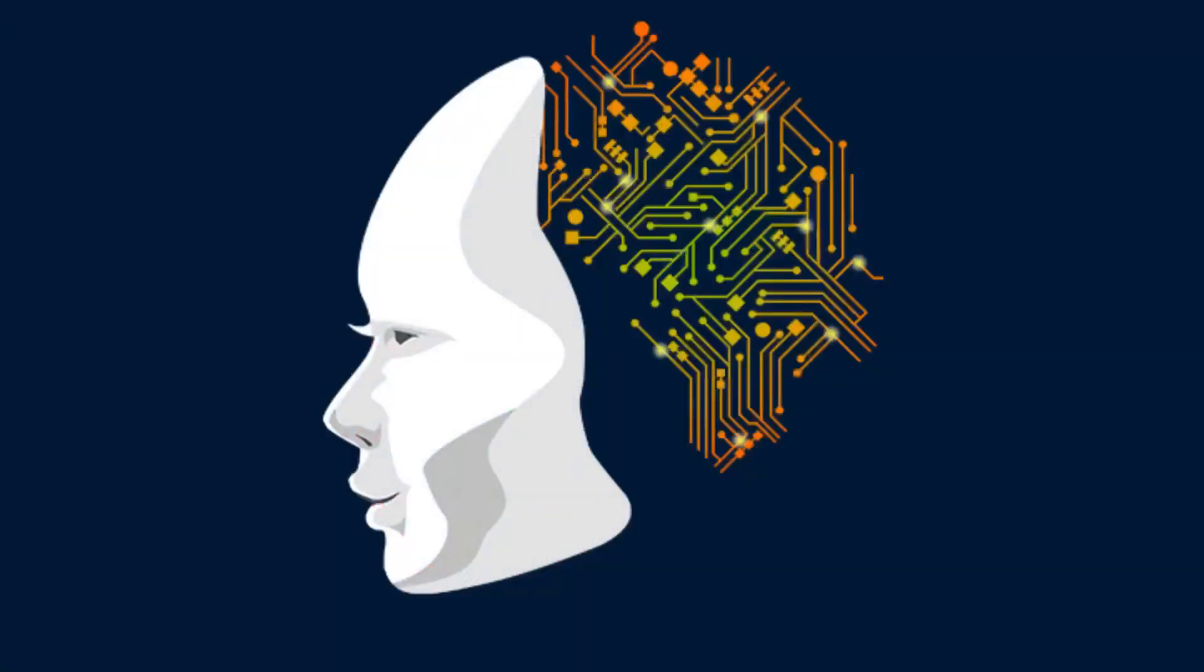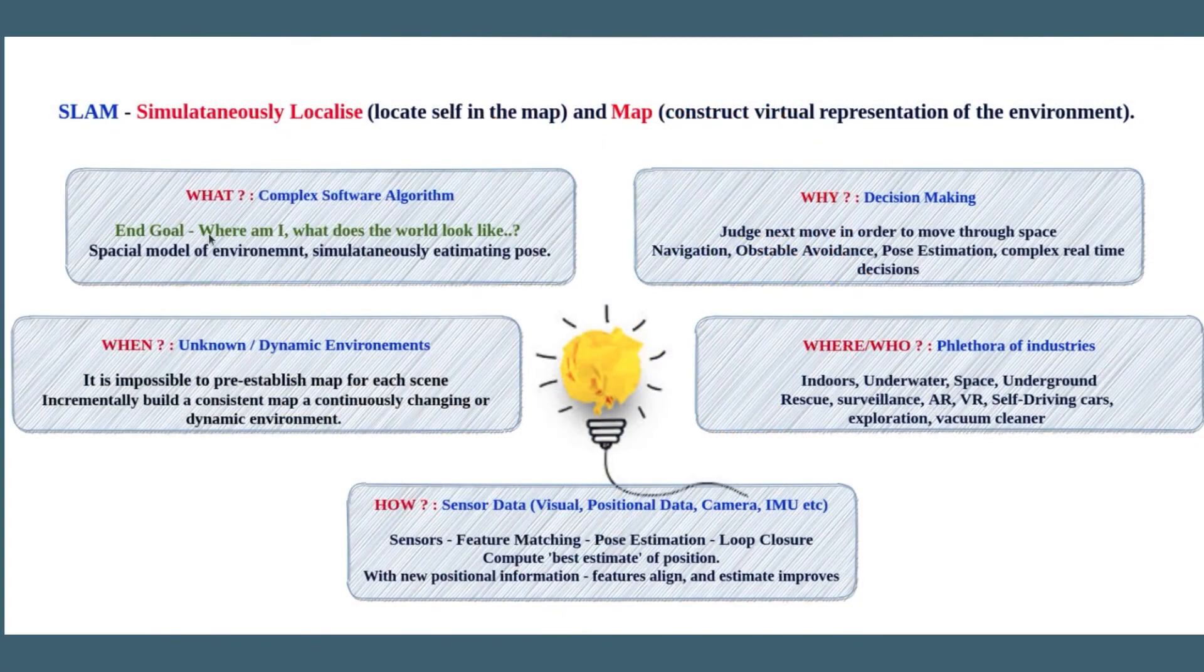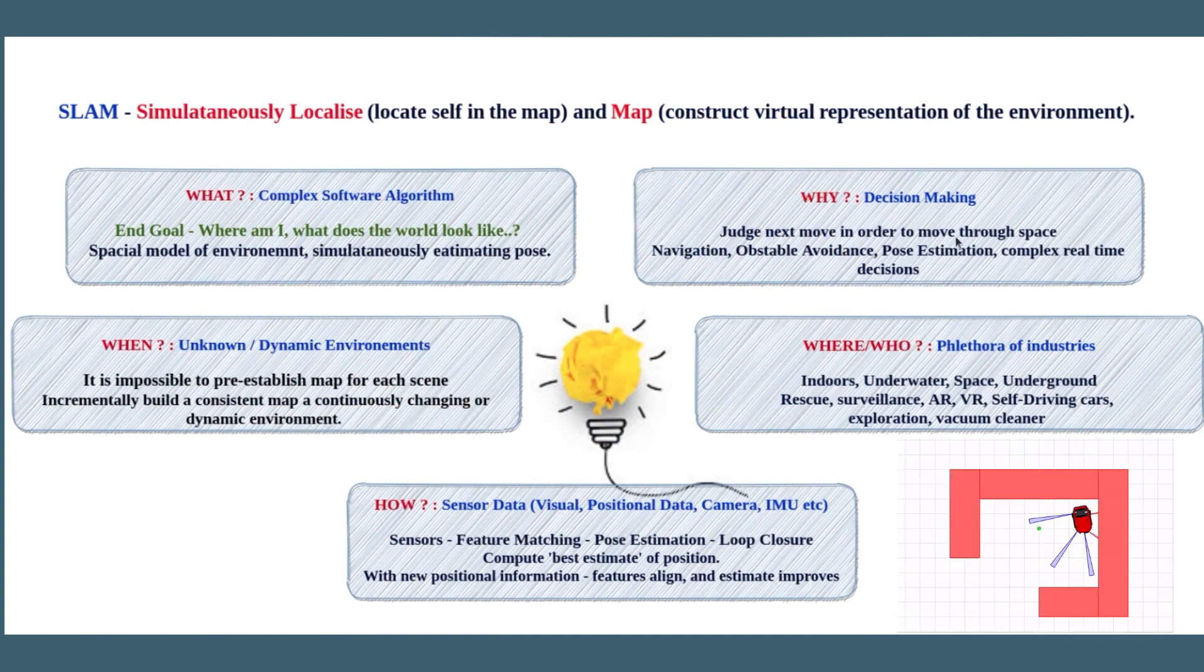Hence the robot needs a smart complex brain like ours, and that's the SLAM algorithm where the end goal is very simple: you need to know what the world looks like and where you are in it. Why is it needed? As we already know, it is essential for a robot to not just navigate autonomously and avoid obstacles but also take critical decisions and perform tasks efficiently and safely.